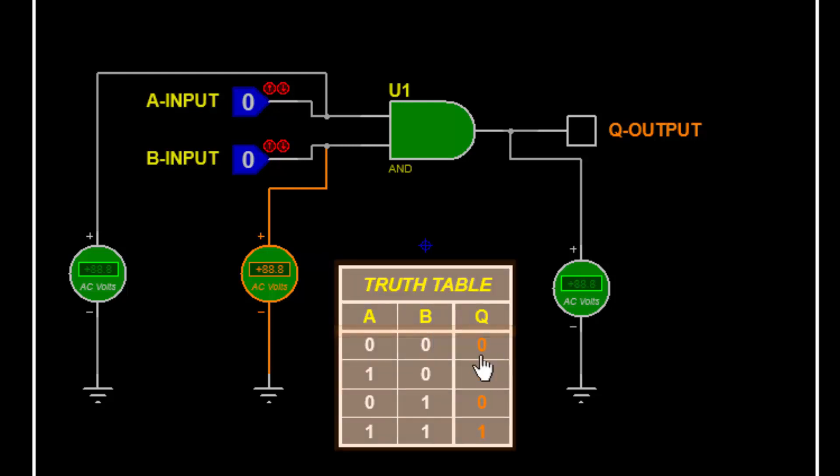For simulation, I will power on. I connected one multimeter at B input, second multimeter voltmeter at A input, so we will monitor the voltage. And here is the output, so I connected this multimeter here.